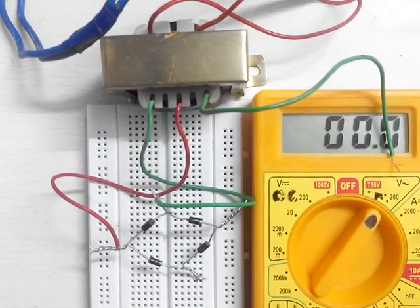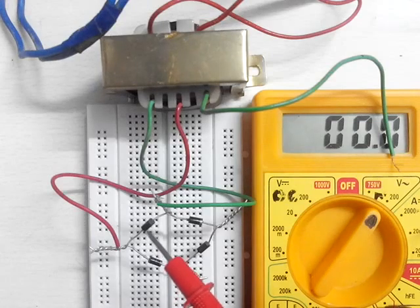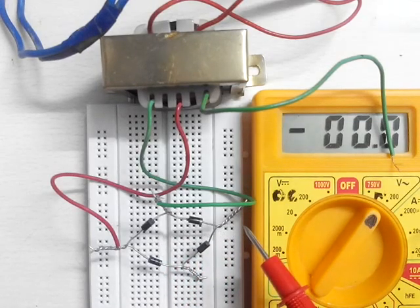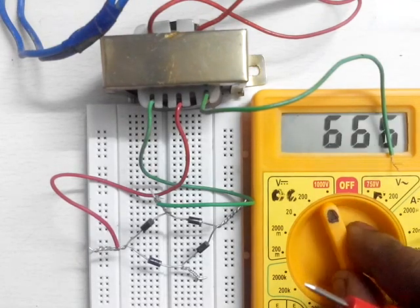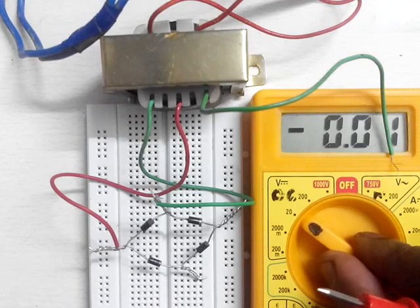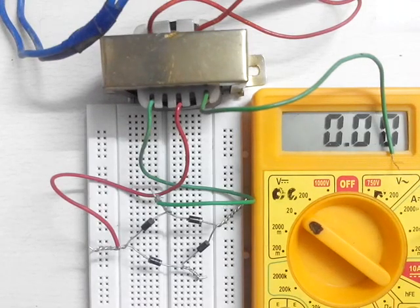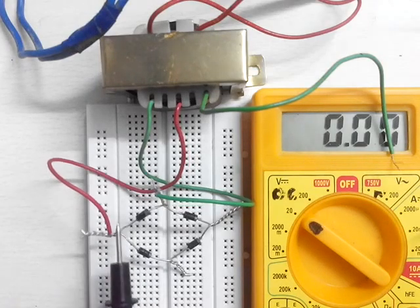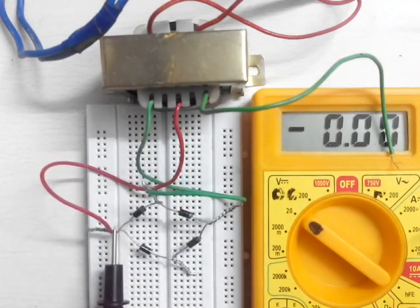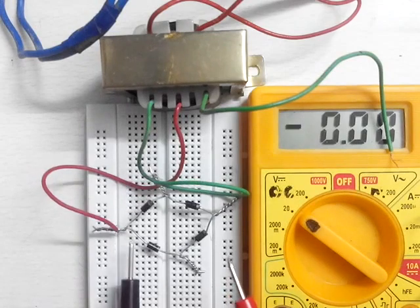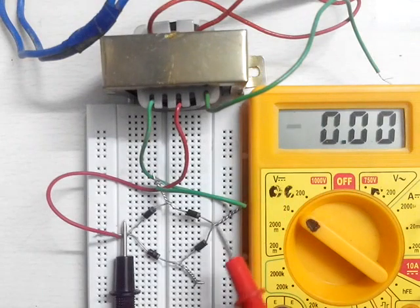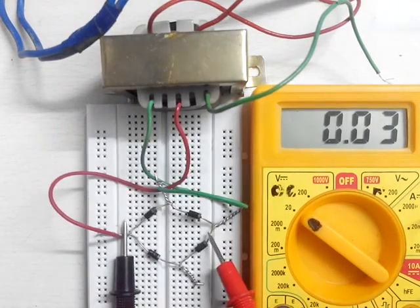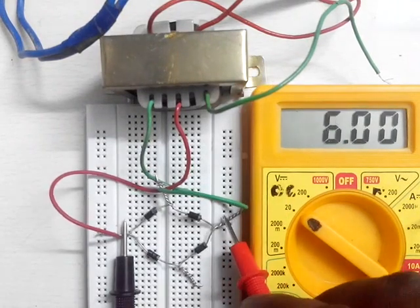As we all know, after the bridge the current would have essentially transformed into DC current. So we will take the multimeter to the DC voltage side, below 20, as we know it is in the range of 20. Let us check how much it is showing at the output.